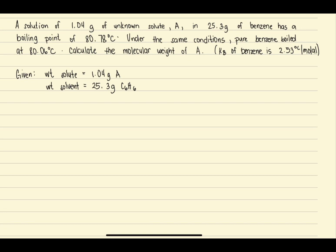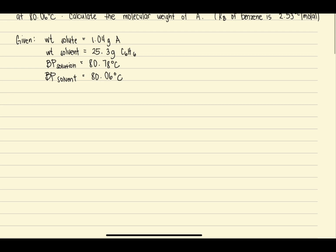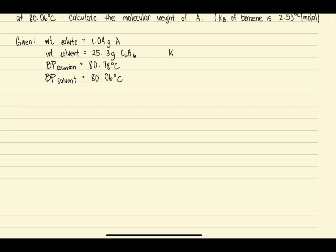We are also given the boiling point of the solution, which is 80.78 degrees Celsius, and the boiling point of pure benzene, or the boiling point of our solvent, which is 80.06 degrees Celsius. And also there's the molal constant of benzene, which is equal to 2.53 degrees Celsius per molal.